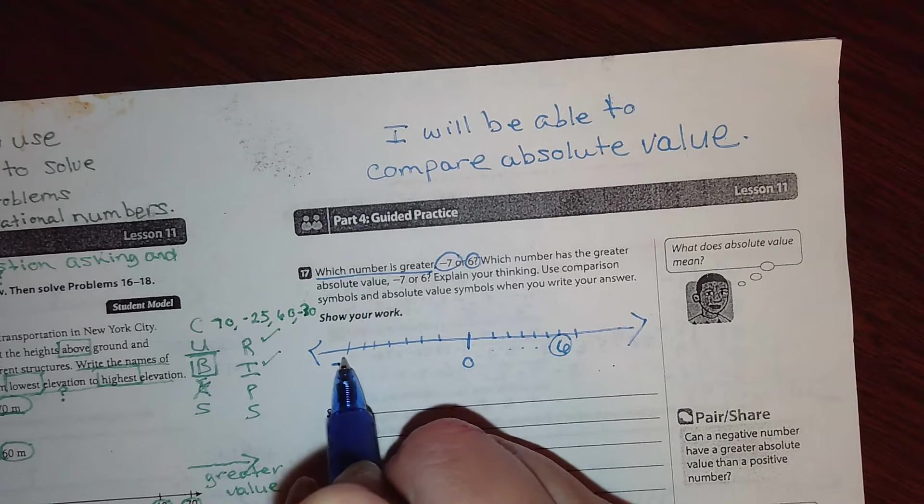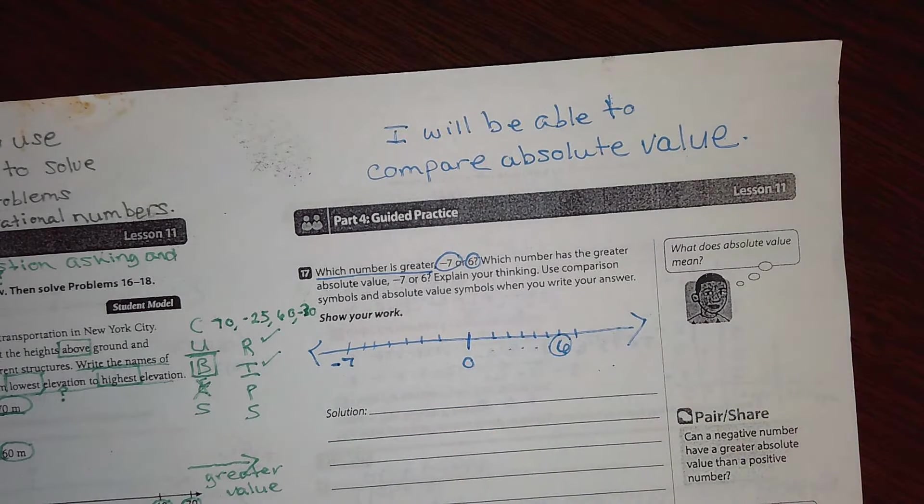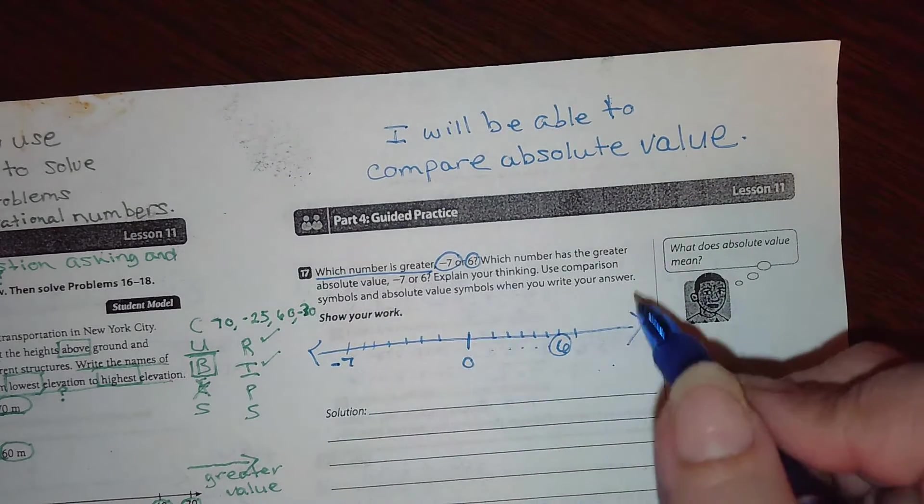This is a negative over here. In a way to look at that is which one is greater, owing somebody $7 or having six bucks under your pocket, right?